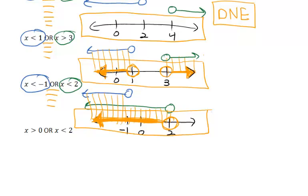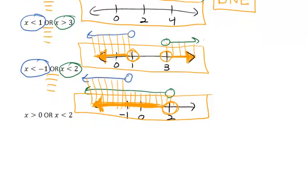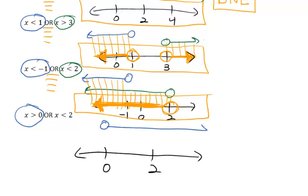The last example. Greater than 0 or less than 2. The first graph goes from 0 up. The second graph goes from 2 down.